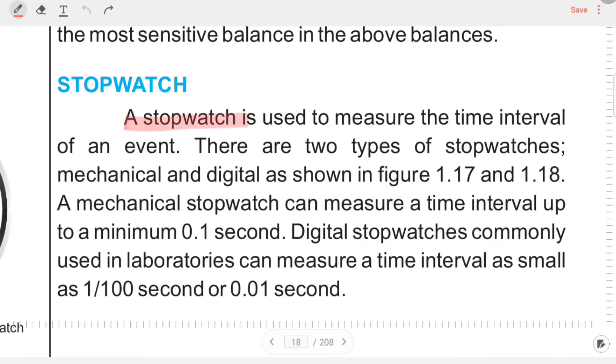A stopwatch is used to measure the time interval of an event. There are two types of stopwatches: mechanical and digital, as shown in the figure. A mechanical stopwatch can measure a time interval up to a minimum of 0.1 seconds.